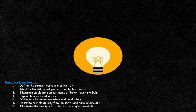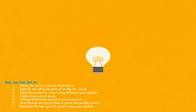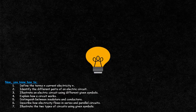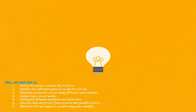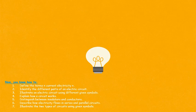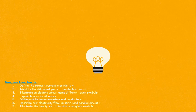Dear students, you must now be able to define current electricity, tell the different parts of a simple electric circuit, draw a light bulb, a switch (open and closed), and connect the battery to the light bulbs using wires. You must distinguish between open and closed circuits, classify things as insulators and conductors of electricity, and tell the differences between a series circuit and a parallel circuit.